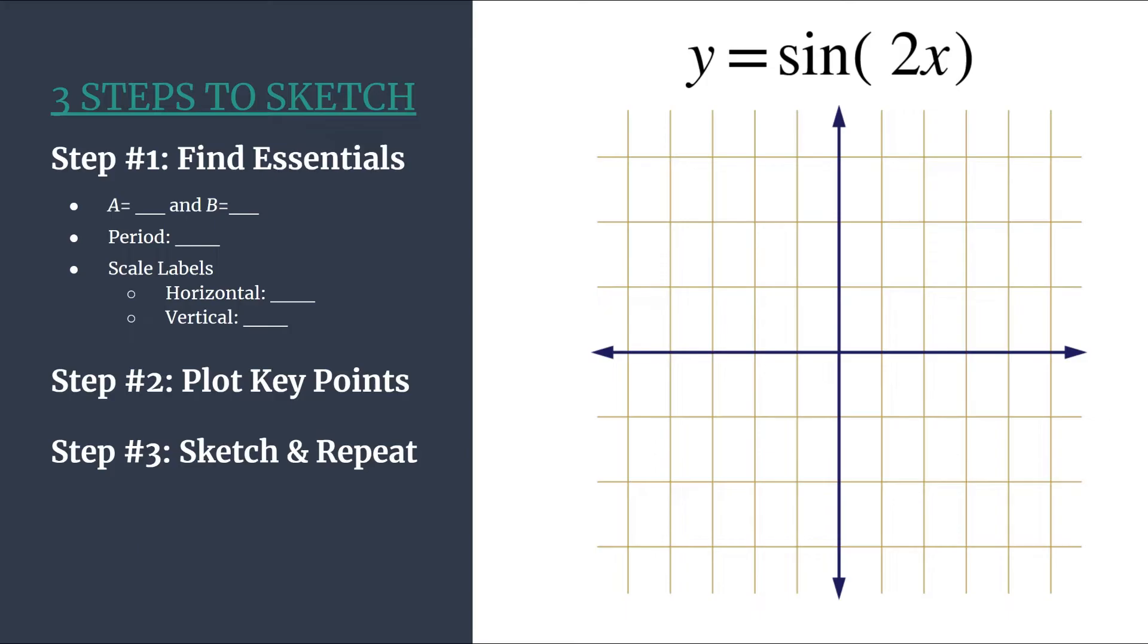And we have our grid on the right so let's go ahead and jump in with step one, find the essentials starting with a and b. Remember we are using this method for trig equations in the form y equals a sine b x. So knowing that it's very easy to identify a and b. So a is an understood one in this case because we know there's an understood one in front of sine. And here b is the coefficient of x, so b is 2.